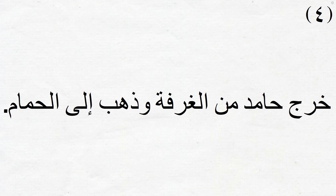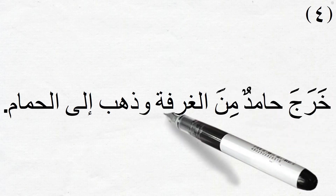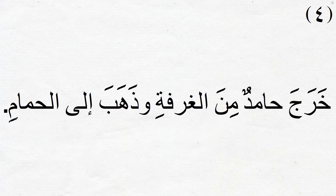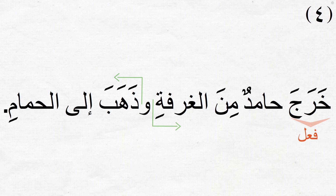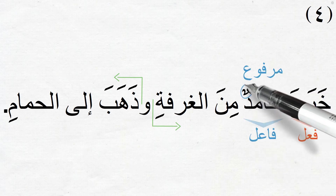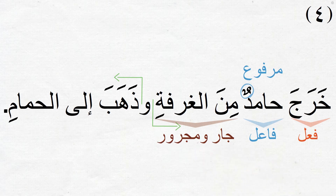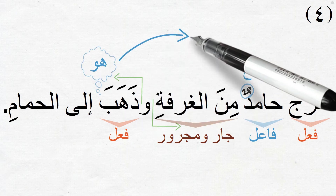Fourth sentence: خرج حامد من الغرفة وذهب إلى الحمام — 'Hamid came out of the room and went to the bathroom.' We have another pair of fi'aliyya sentences. The fi'al of the first is خرج followed by the fa'al حامد, which is a marfu' ism, then جار مجرور من الغرفة. The second sentence is ذهب إلى الحمام, where the fa'al is hidden and refers to huwa, which in turn refers to حامد.